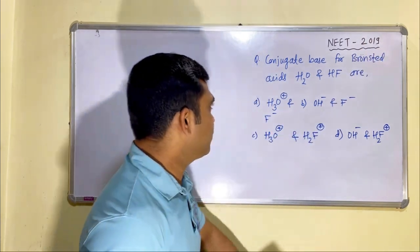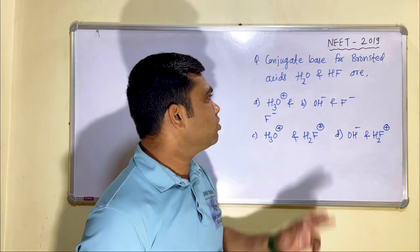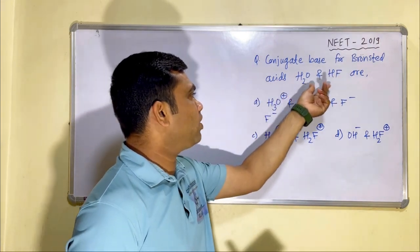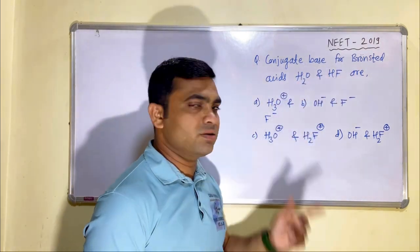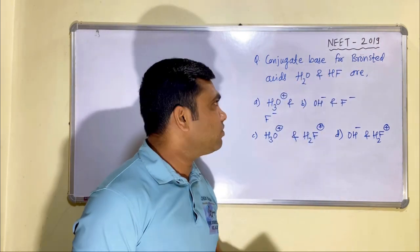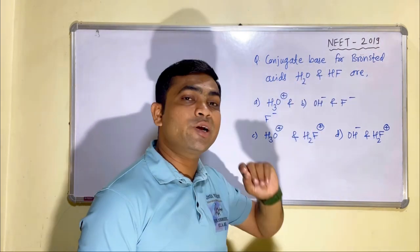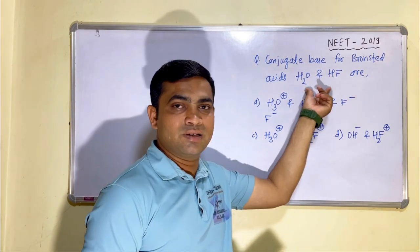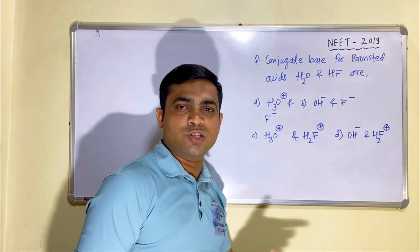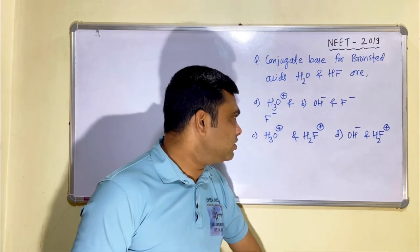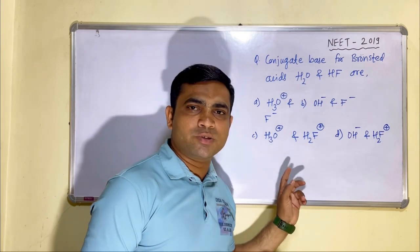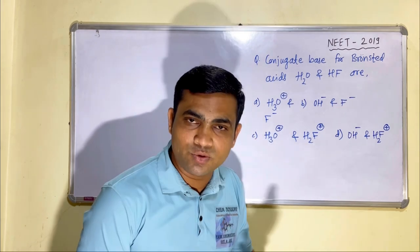The question is: find the conjugate base for Bronsted Acids H2O and HF. We have to find out the conjugate base for both of these acids. Different options are given, and once you look at the options you may get confused.